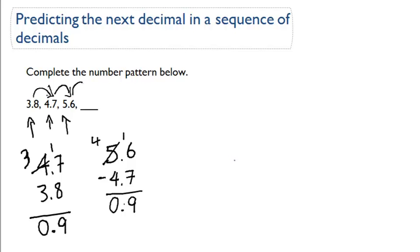So we know the next number is just going to be 5.6 plus, you got it, 0.9. So let's add these up. 6 plus 9 is 15. 1 plus 5, carry the decimal place. 1 plus 5 is 6. The next number in your pattern is 6.5. Great job.